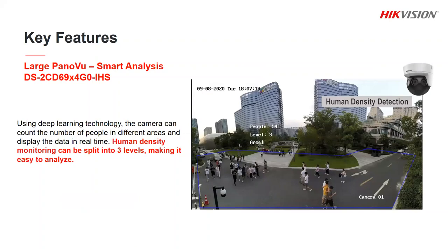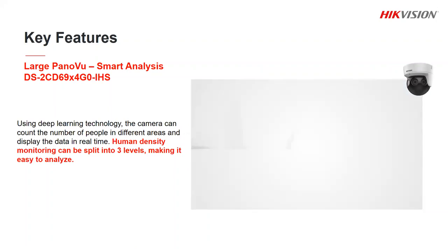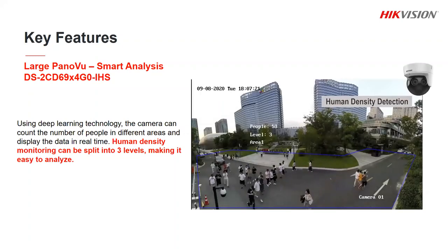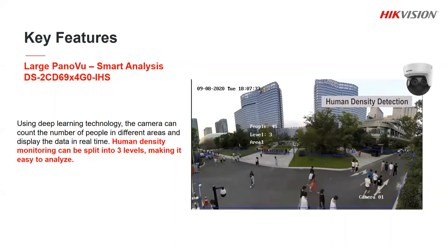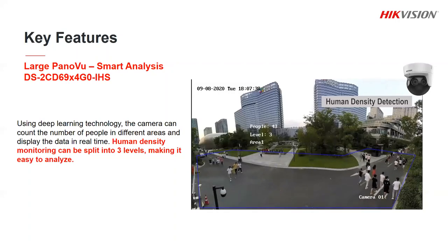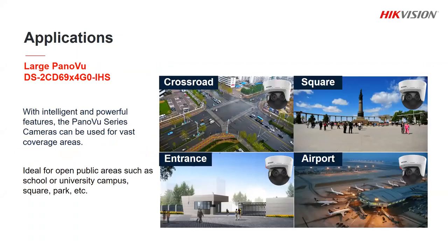With human density analysis we can set up to three areas in the scene where we want to keep track of the number of people at any given time. We also have three different levels — for example more than 10, 20, or more than 50. This could be used for crowd control or just where you want to understand how busy a certain area is. These cameras are used at crossroads where we now have full coverage of the scene in one view, and in public squares — if someone is moving through the entire scene we can follow them from one side to the other without switching between multiple cameras.